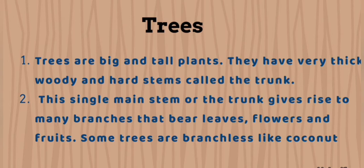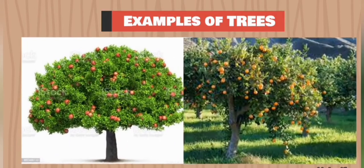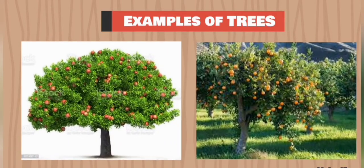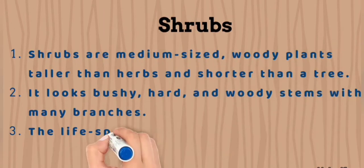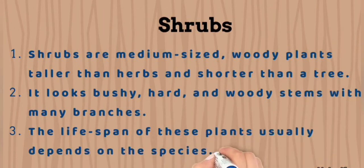This single stem or trunk gives rise to many branches that bear leaves, flowers, and fruits. Some trees are branchless too. Examples of trees are the apple tree and the orange tree.